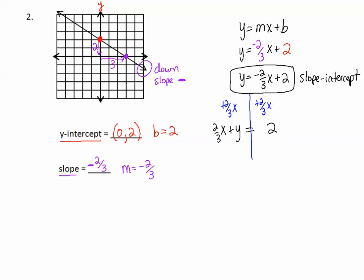Now we don't want divided by 3, so we're going to multiply both sides by that denominator of 3. Distribute the 3, and we write 3 times 2 thirds x plus 3 times y equals 3 times 2. 3 gets multiplied to every part.